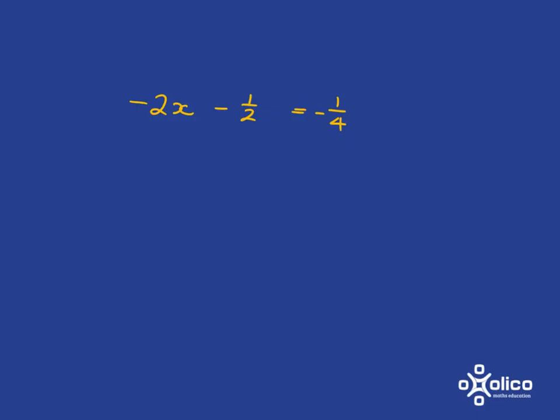And let's finish off by looking at a monster that has negative numbers and fractions in it. Again, if we just go step by step, we can get there. Here we're wanting to solve for x.